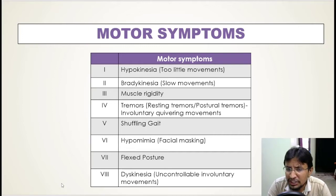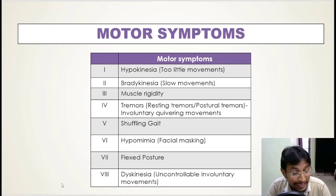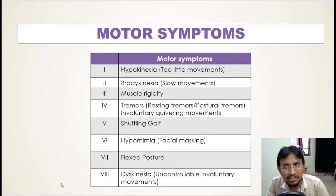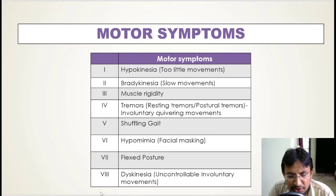Deep brain stimulation won't cure the disease, but it may help lessen symptoms significantly — though usually they don't go away completely. We will look at footage comparing Parkinson's disease before and after deep brain stimulation. The next motor symptom is shuffling gait. Gait refers to a person's manner of walking, and in Parkinson's disease, patients walk with very small footsteps.